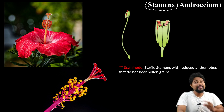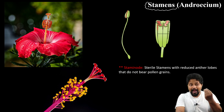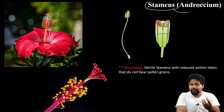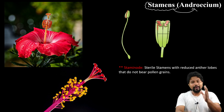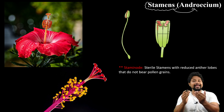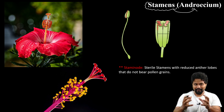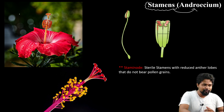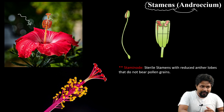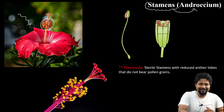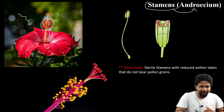Stamen is the male reproductive part. The group of stamens is called the androecium. So, the androecium consists of the stamens. It is the male reproductive part of the flower.